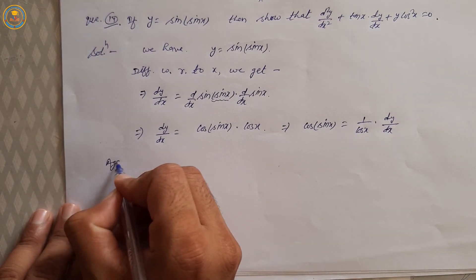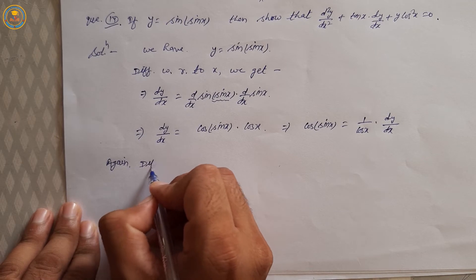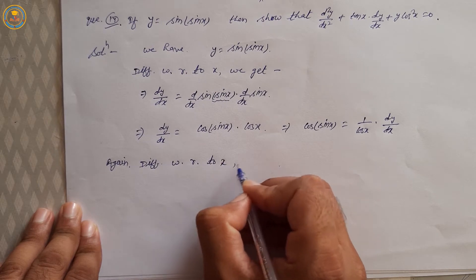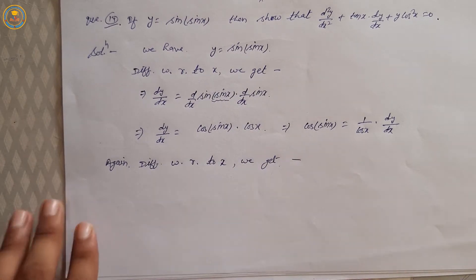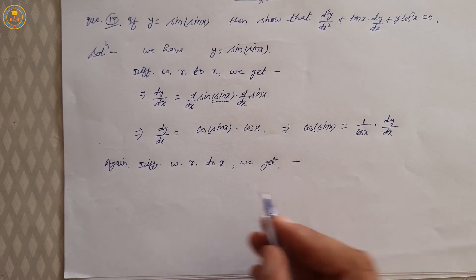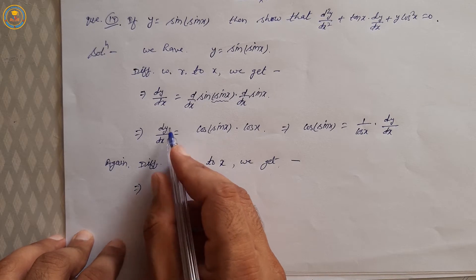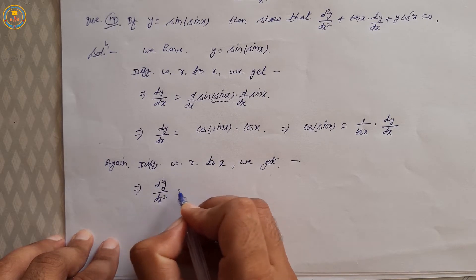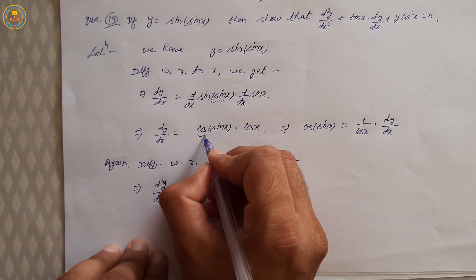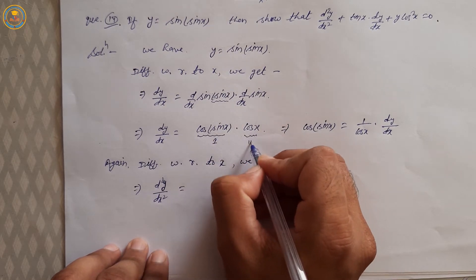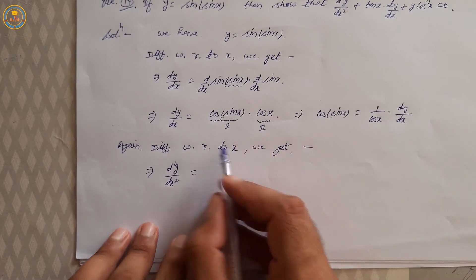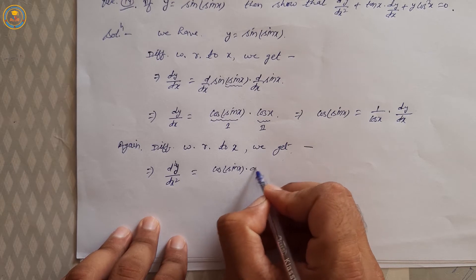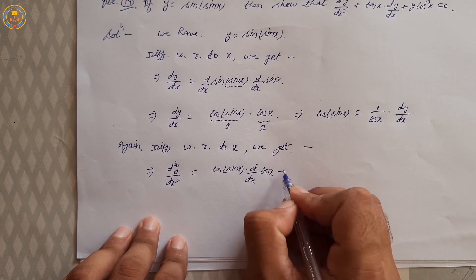Again differentiate with respect to x. d/dx of dy/dx = d²y/dx². Using the product rule: first function same, cos(sin x), into dy/dx of cos x, plus second function same into dy/dx of sin x.